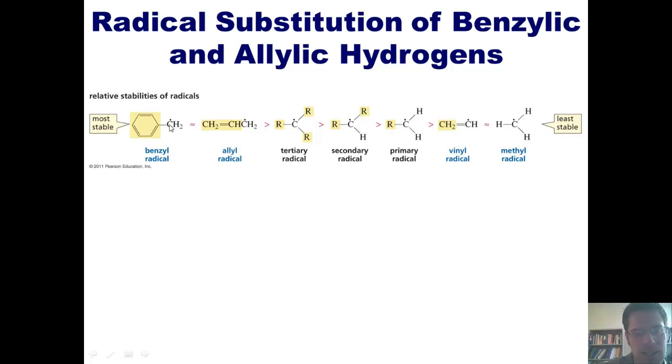First of all, I need to remind you what a benzylic or allylic hydrogen is. A benzylic hydrogen is a hydrogen that is attached to a carbon that is one position away from a benzene ring. If I remove that hydrogen radically, I end up forming a benzyl radical at this position.